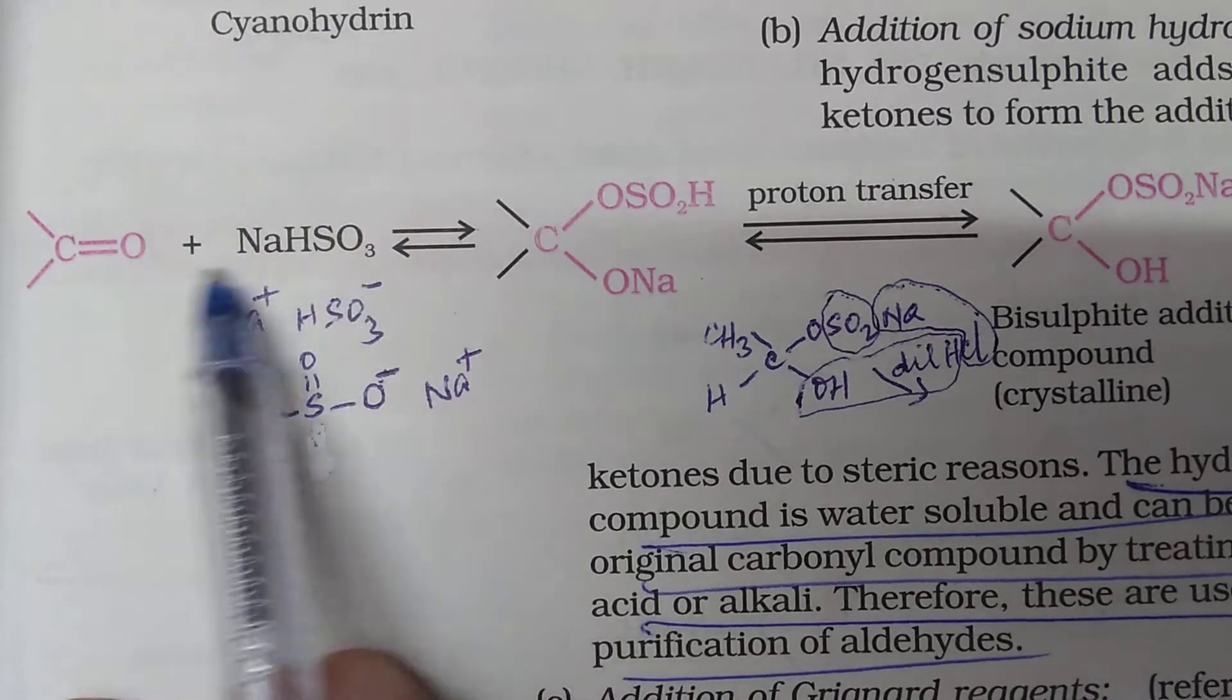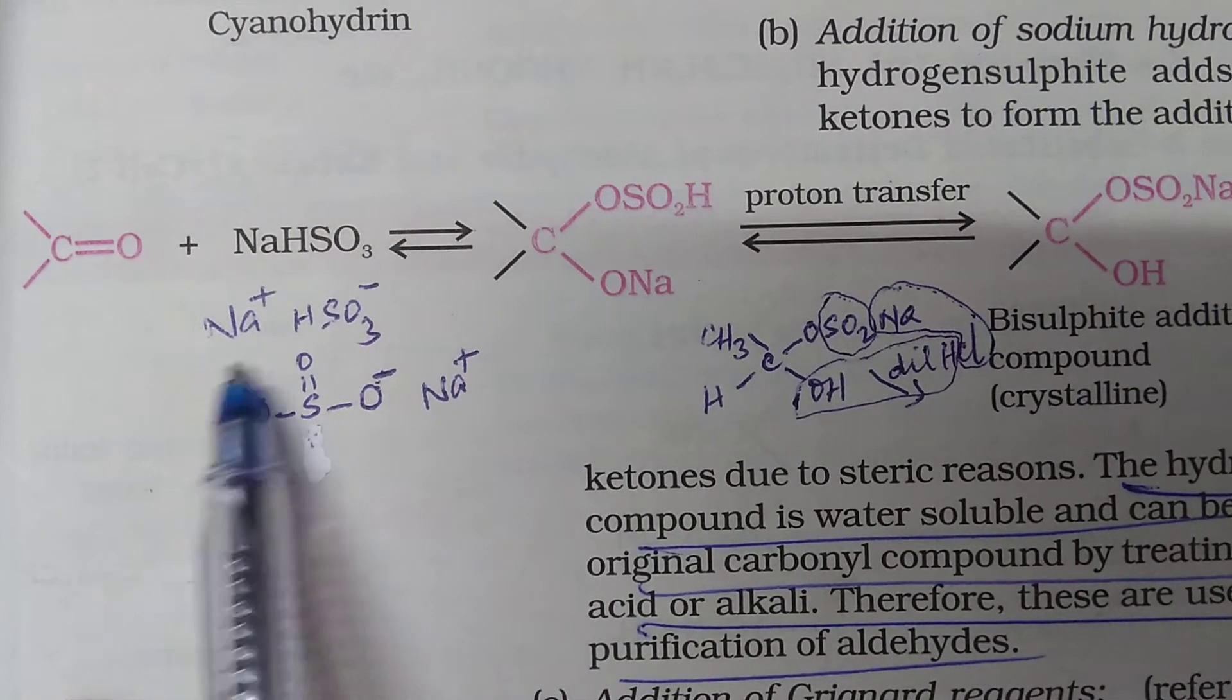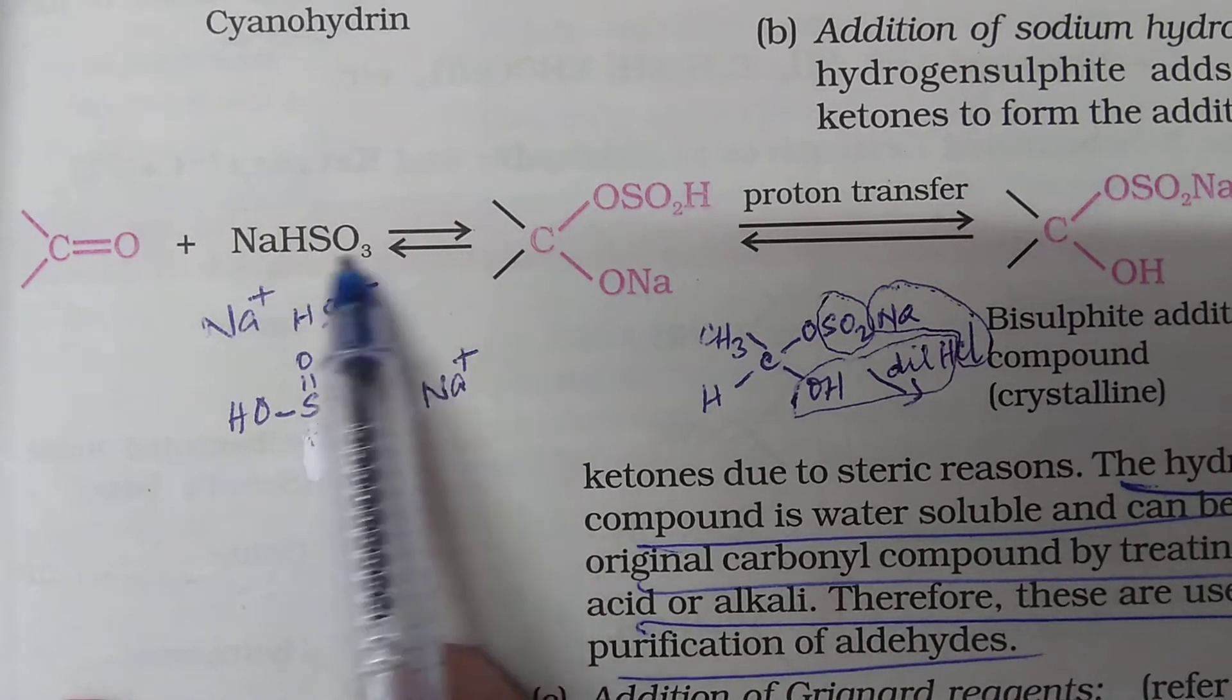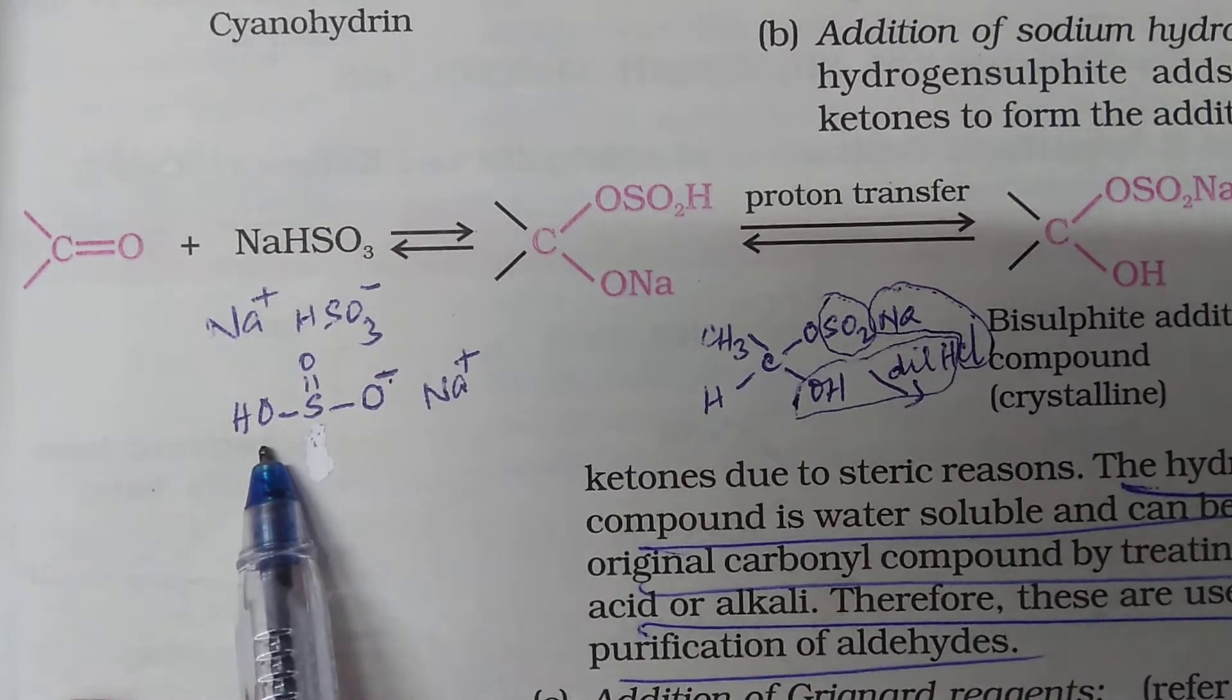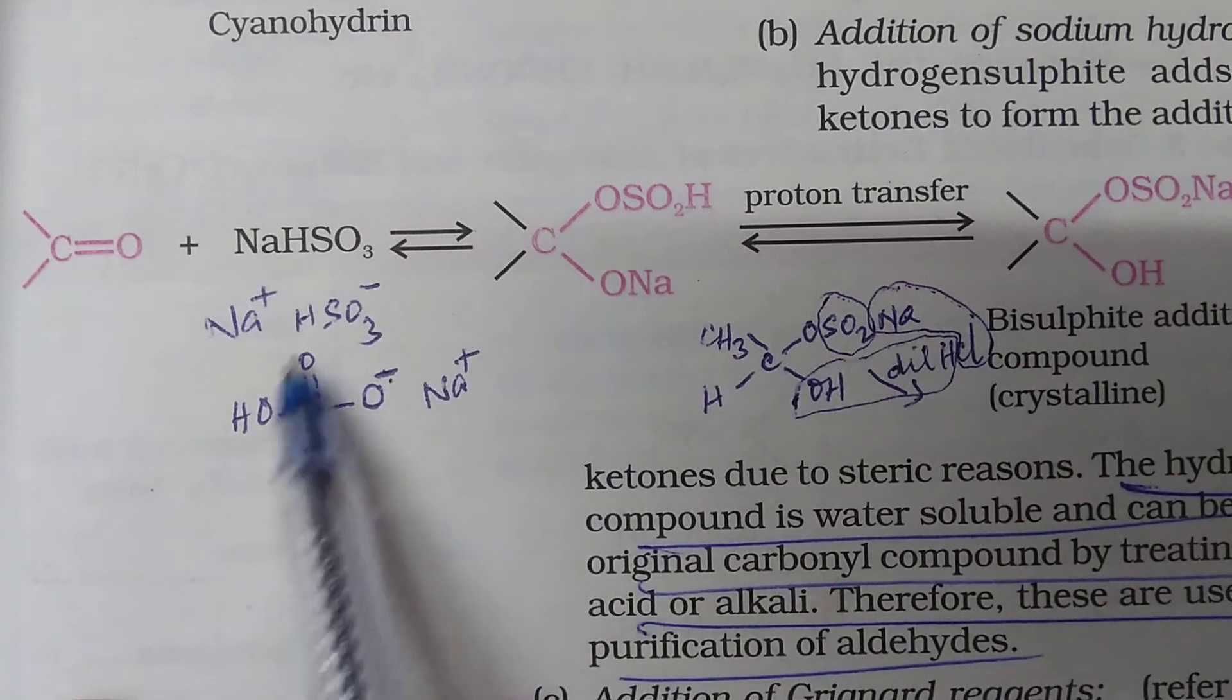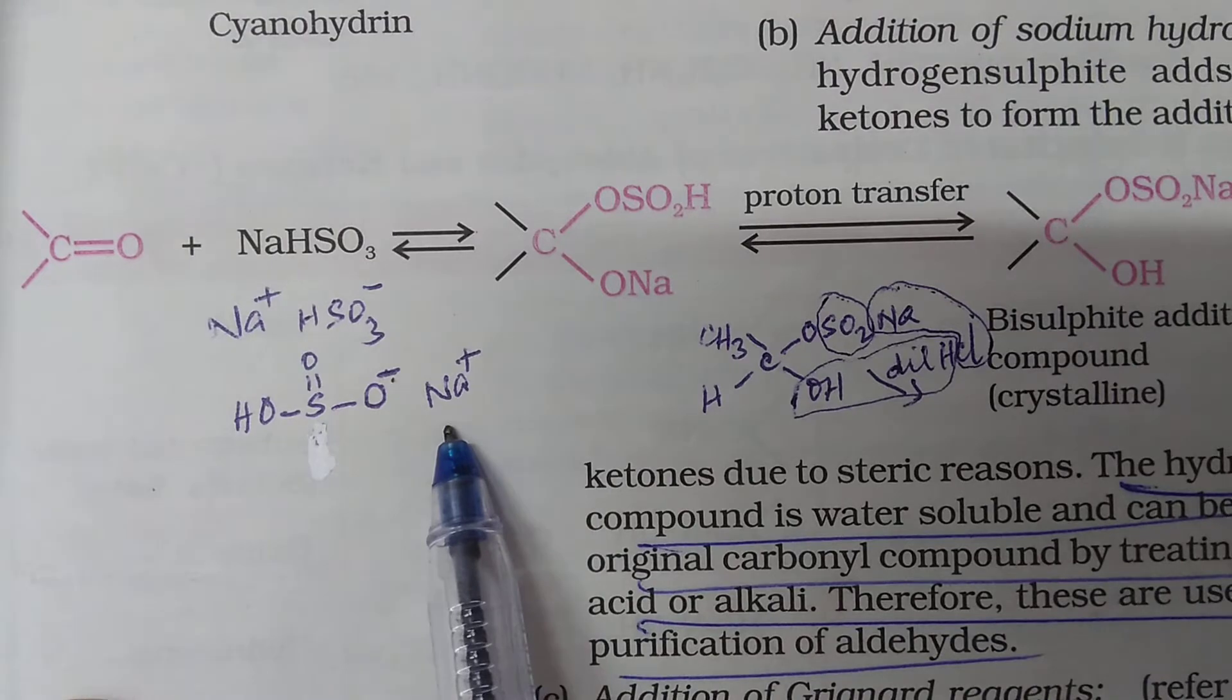Sodium bisulfite is NaHSO3. How do you split that? Na plus and HSO3 minus. Now, how is this HSO3 minus written? See, OH, S double bond O, O minus. Is that clear? So, HSO3 and Na plus.